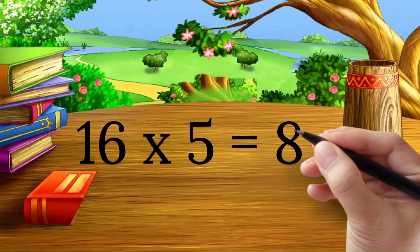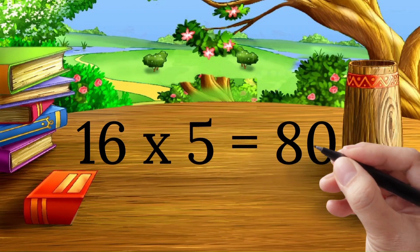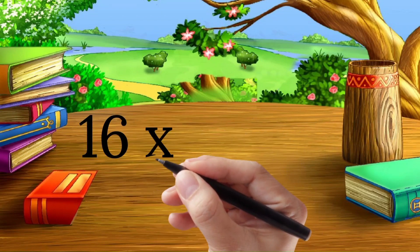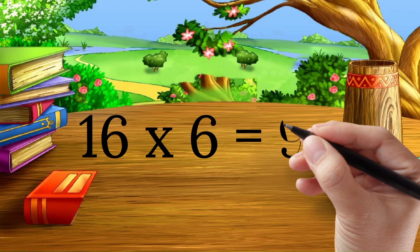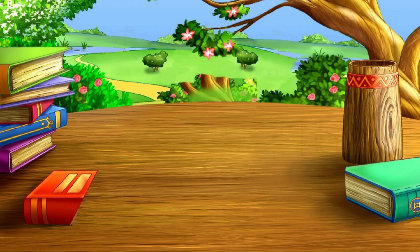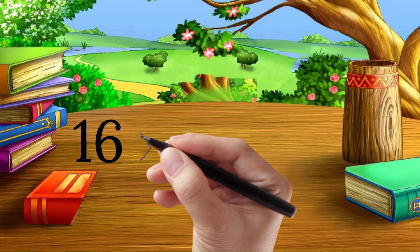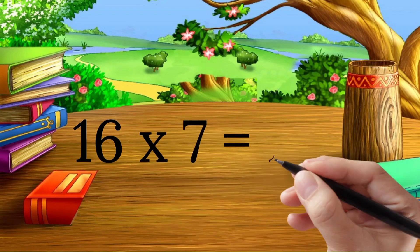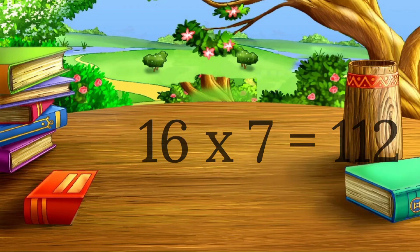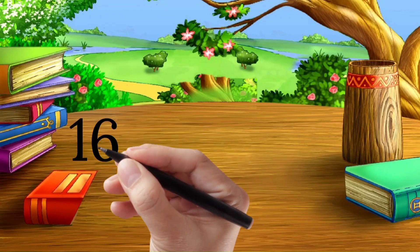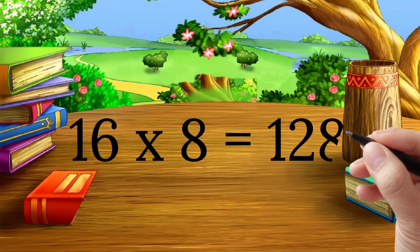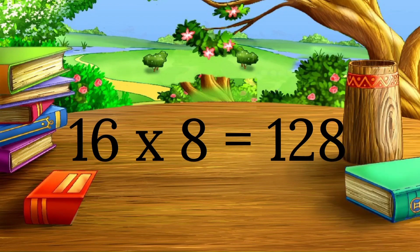Sixteen five's a eighty. Sixteen six's a ninety-six. Sixteen seven's a one-hundred-twelve. Sixteen eight's a one-hundred-twenty-eight.